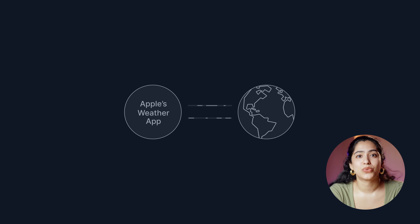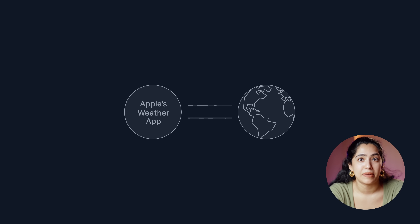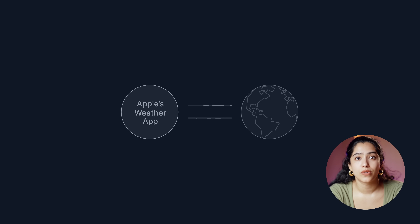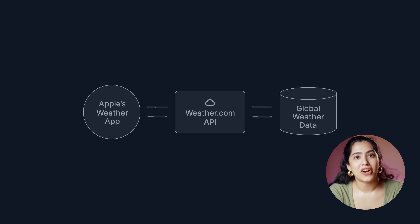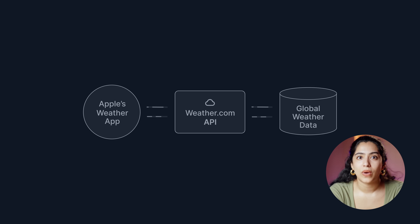For a more technical example, think about Apple's weather app. Do we think that Apple decided to set up weather monitoring stations around the world? That's a really expensive endeavor. But there are already services out there that meticulously collect global weather data, services like weather.com. So if weather.com creates an API through which anybody can access their data — but only in the ways that weather.com allows — then Apple could just use that API to populate their weather app.